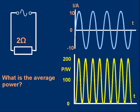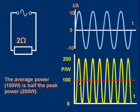The average power — I've marked it in red — is 100 watts. It's right in the middle between 0 and 200. That's because of the shape of the sine curve: it's symmetrical about this red line, and the red line is in the middle between 0 and 200. We can say the average power is 100 watts, and it's half the peak power of 200 watts.